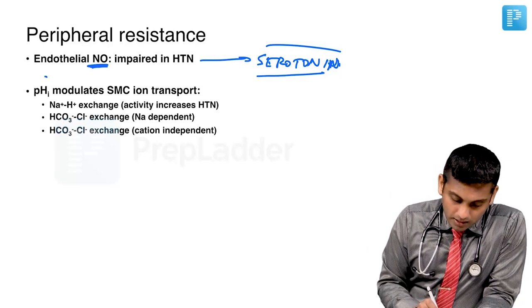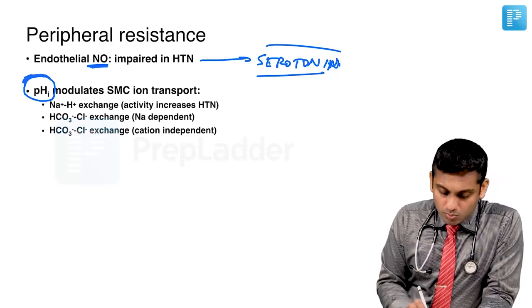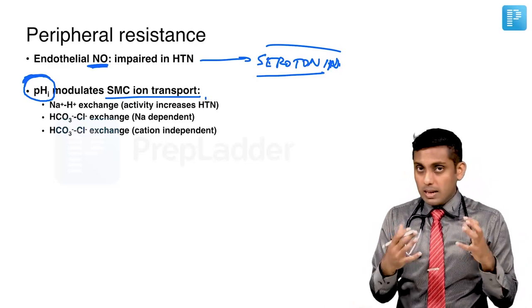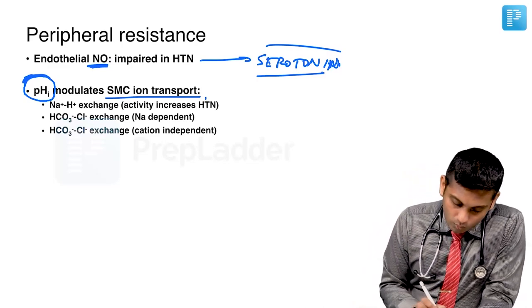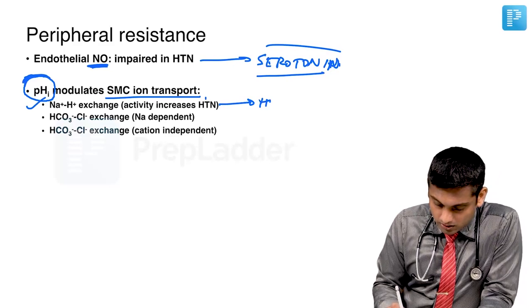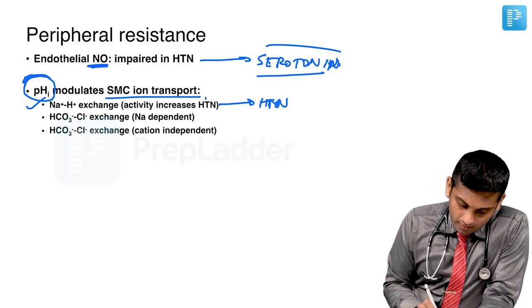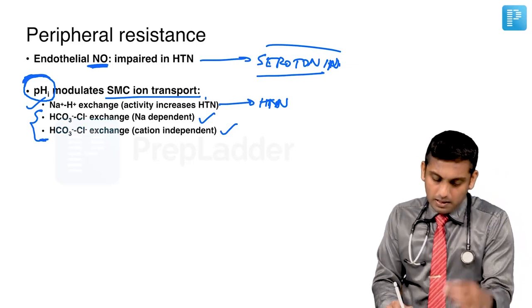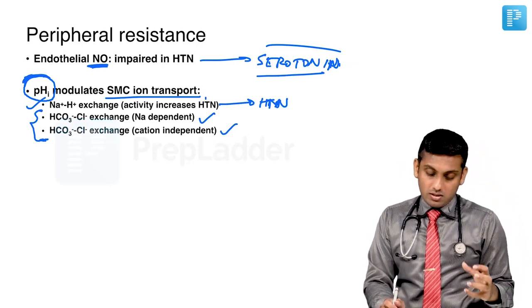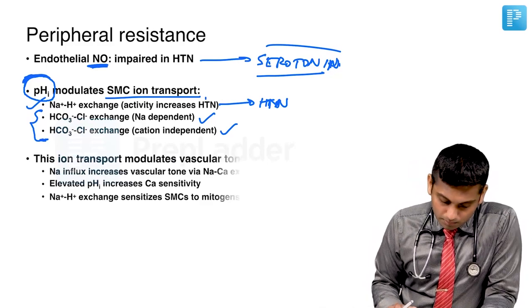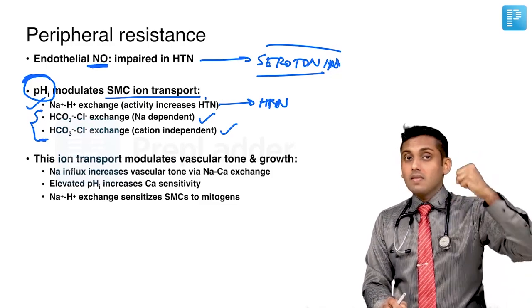There is something called the intracellular pH, or pH subscript i. Intracellular pH modulates the smooth muscle cell ion transport. There are essentially three types of ion transports across the smooth muscle cell: one is sodium-hydrogen exchange, which is implicated more in hypertension; then there is the exchange of bicarbonate and chloride — both are anions — with one being sodium-dependent and one sodium-independent. These are the three types of exchanges — anionic and cationic — that happen at the smooth muscle cell depending on the intracellular pH, which governs this exchange.